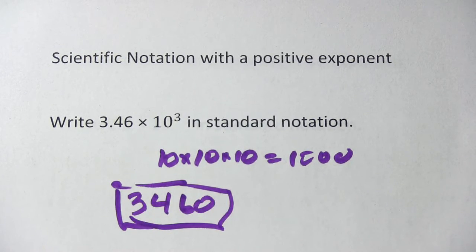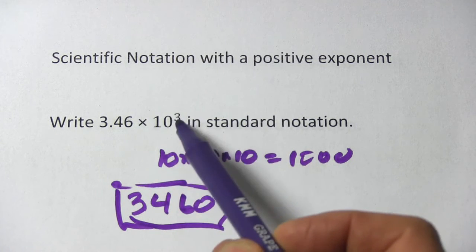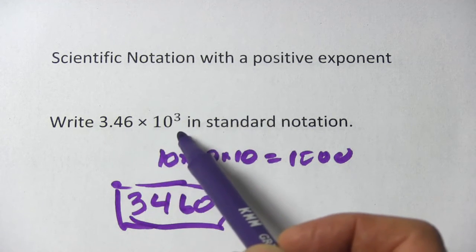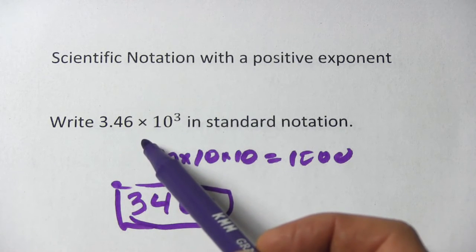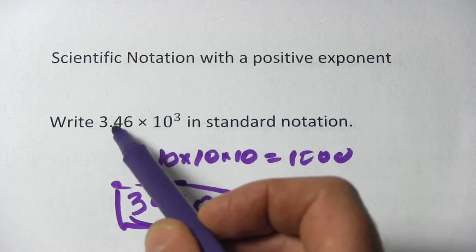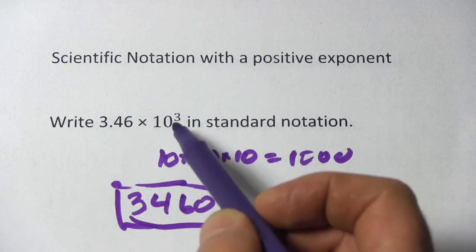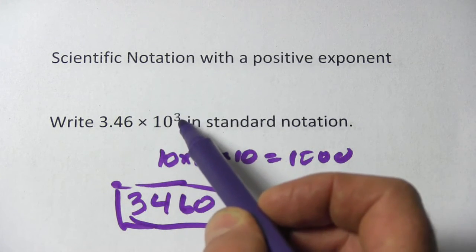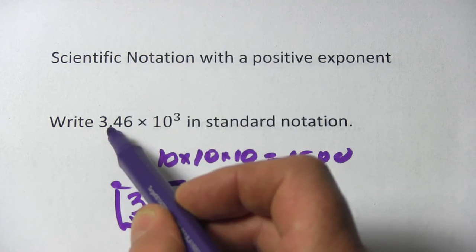There is kind of a shorthand way to do this that comes in really handy. If you want to convert to standard notation from scientific notation, and you've got a positive exponent like this, you're just going to move the decimal point to the right as many spaces as the exponent. So in this case, we're going to move it 3 spaces to the right.